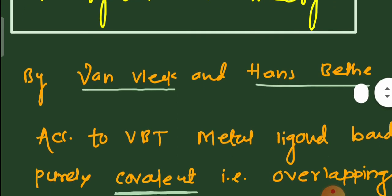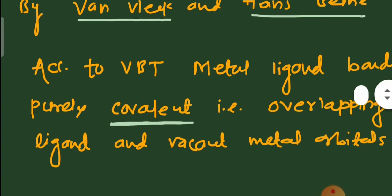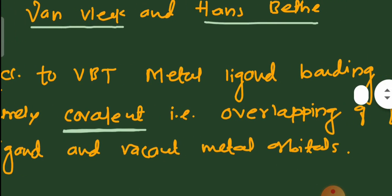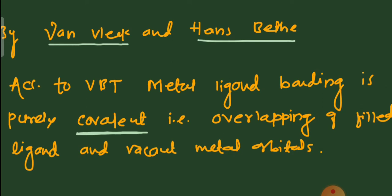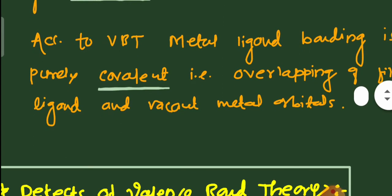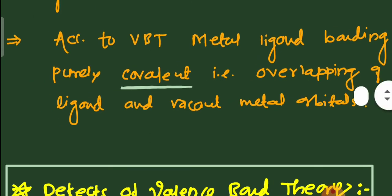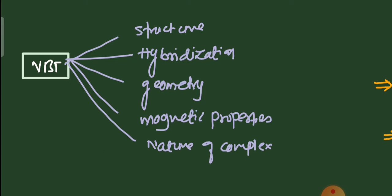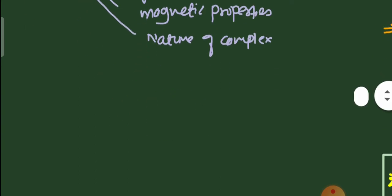Valence bond theory was given by Linus Pauling. Now, what is the actual cause for Crystal Field Theory and what are the limitations of VBT? According to valence bond theory, the metal-ligand bonding is purely covalent in nature — there is overlapping of a filled orbital of the ligand with the vacant orbital of the metal, forming a coordinate covalent bond. Valence bond theory is well known for identifying structure, hybridization, geometry, magnetic properties, and nature of complexes.